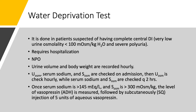Let's talk now about the water deprivation test. This test is time-consuming and requires a specialist — a nephrologist or an endocrinologist. It's not done very often and requires hospitalization, at least observation. We usually do it when we're not sure about the cause of the hypernatremia, especially if we're suspecting central DI, complete central DI, where urine osmolality is below 100 and there is severe polyuria. Patients are kept NPO, which is why hospitalization is needed — you don't want to dehydrate the patient or cause hypotension.